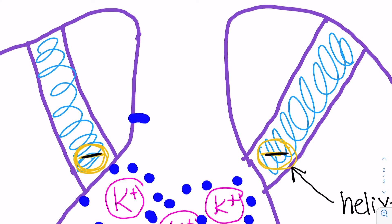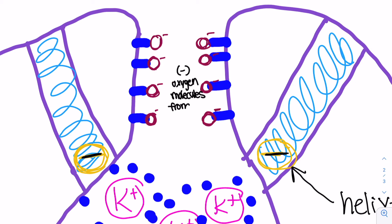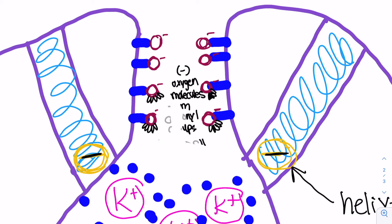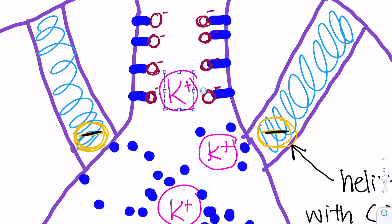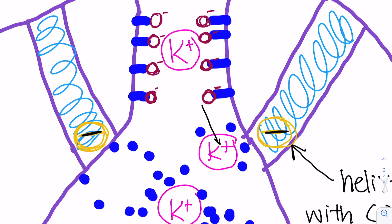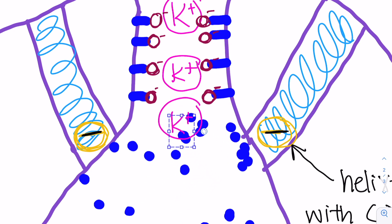Inside the selectivity filter, negatively charged oxygen molecules from the carbonyl groups act as hands to grab and steal only the potassium ion. This oxygen acts as a replacement for the oxygen from the water molecule. The next incoming ion pushes the preceding ion through the pore and allows potassium to exit the cell.